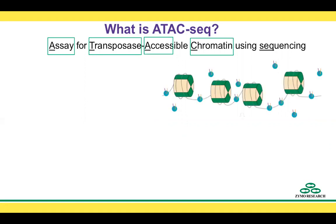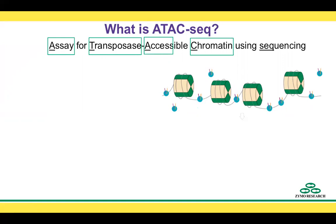Let's now look at a schematic of what happens during ATACSeq. In this schematic, the green and yellow cylinders are nucleosomes. The nucleosomes have DNA wrapped around them and in between them. The blue circles with the colored DNA strings represent the transposase. The transposase attaches to DNA in regions of open chromatin, cutting the DNA and leaving behind the colored DNA strings.